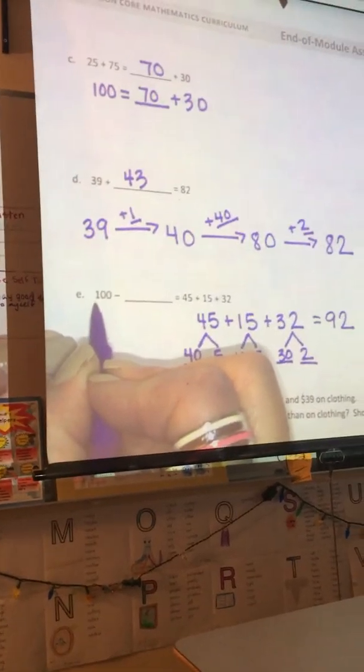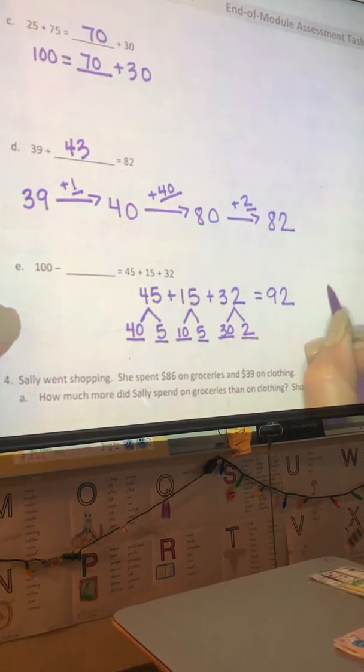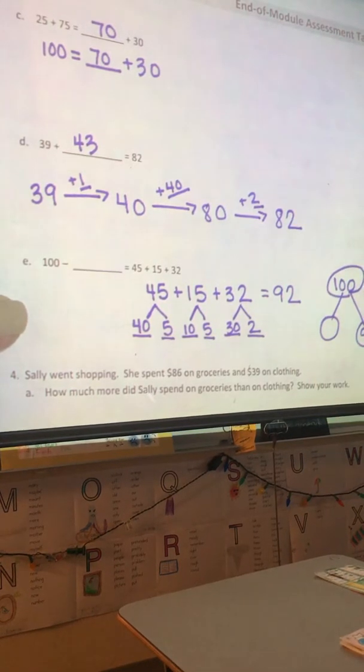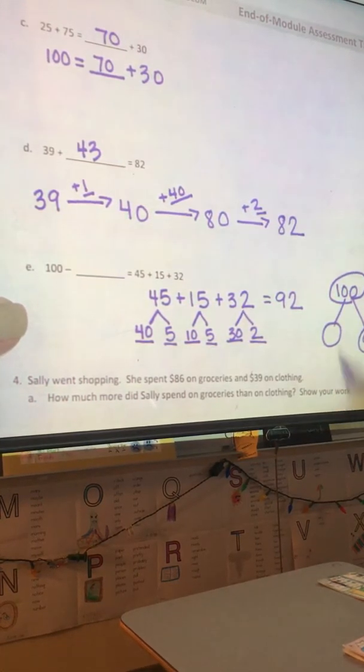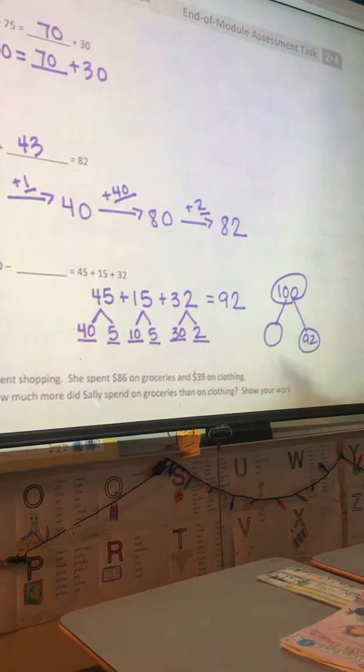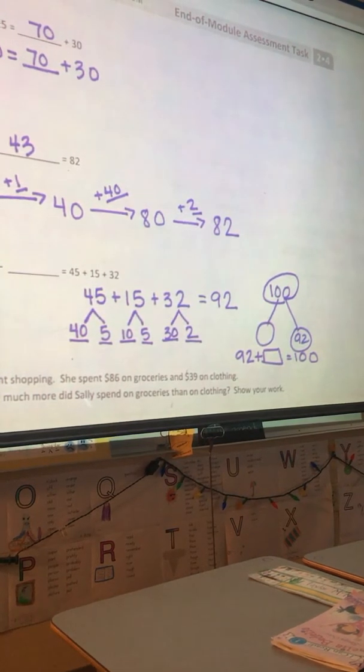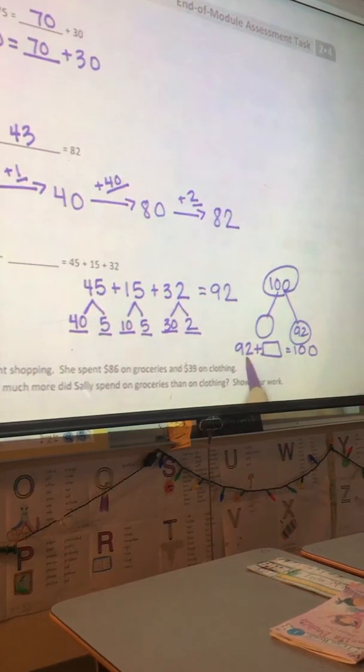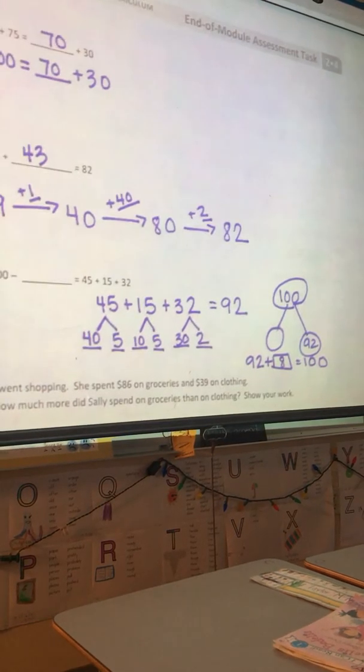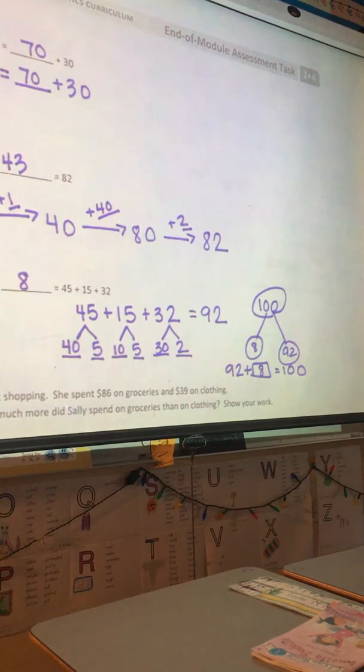Now, we need to go back to the blank up here. 100 minus something equals 92. I'm going to put a number bond up here to help me think about that in a more clear way. 100 minus something equals 92. And when I look at the number bond like this, I can see 100 minus something equals 92. And I also know that the two numbers on the bottom combined will equal 92. So, 92 plus something equals 100. And, again, my strength in composing a 10 comes in very handy here because I know that 2 plus 8 equals 10. So, 92 plus 8 equals 100. So, to fill in the blank, I know that 100 minus 8 equals 45 plus 15 plus 32. Thank you.